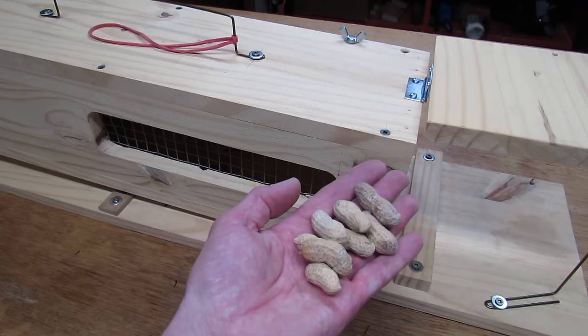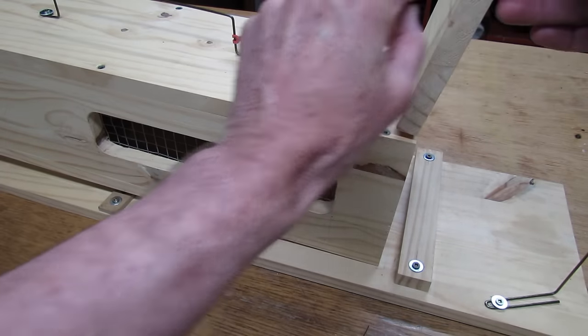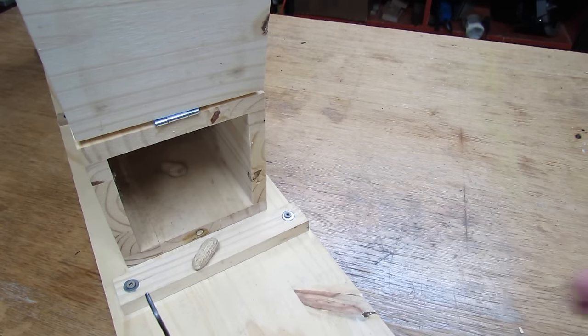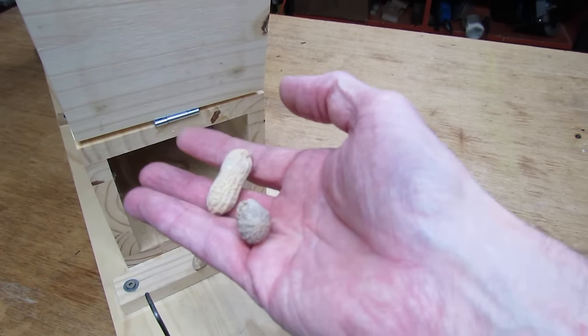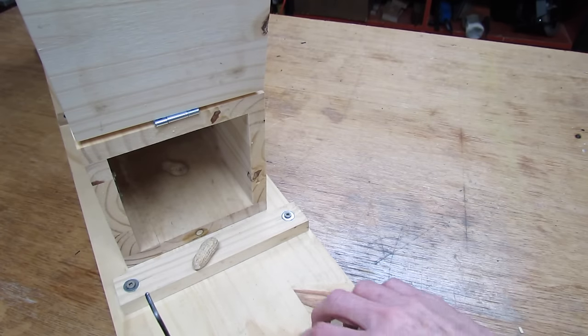When you're ready to bait it I find the best of shelled peanuts. For the first day or two I suggest holding the door open with the elastic band. And place one peanut right there. One about 3 inches inside of the door. Then take two more peanuts and toss them right to the very back of the trap.